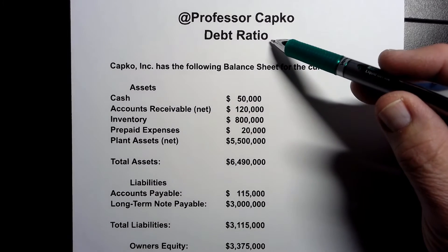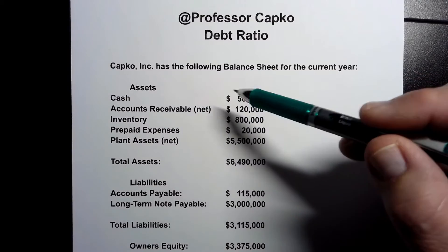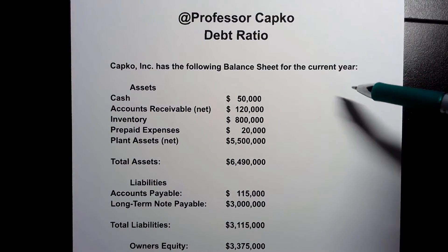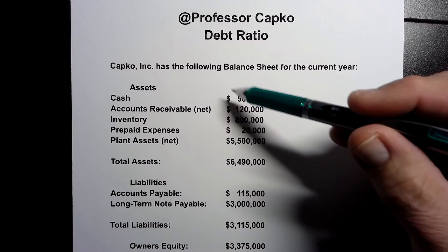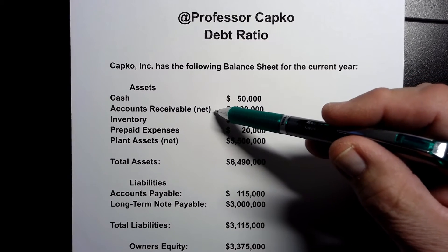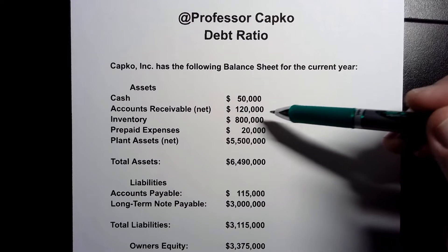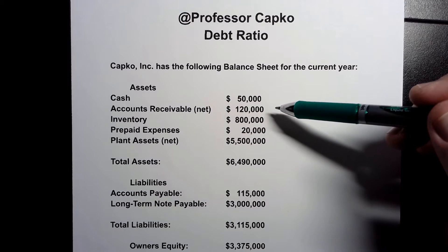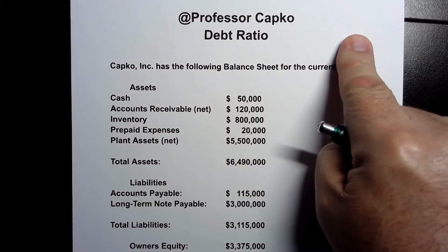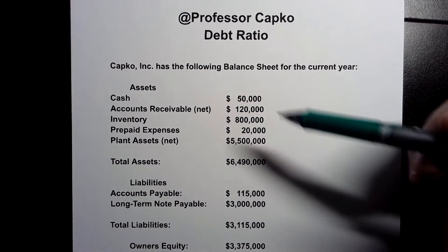So we're going to figure that out regarding Capco Inc. Capco Inc. has the following balance sheet for the current year. Its assets include cash and accounts receivable net — what we mean by net is that's taking out any kind of allowance for doubtful accounts. If you want to know more about allowance for doubtful accounts I've got a video explaining that so you may want to check that out.